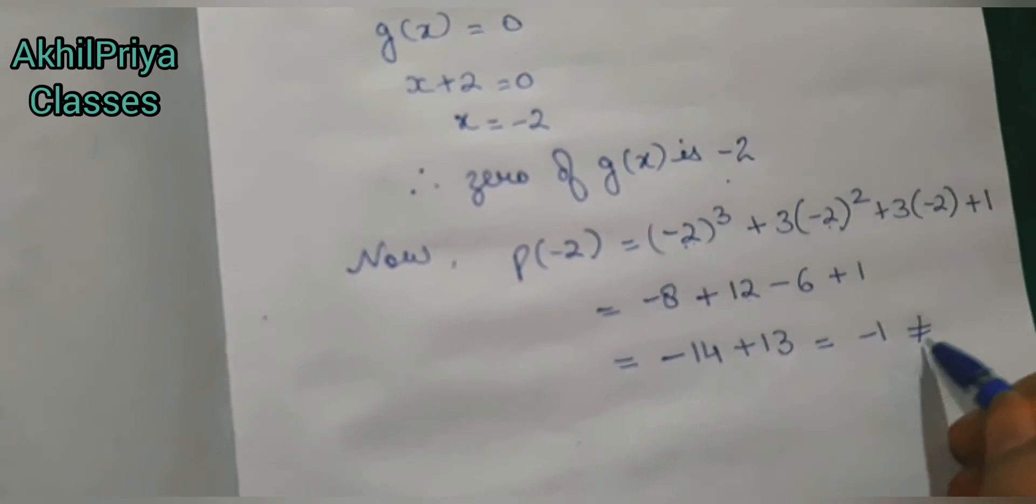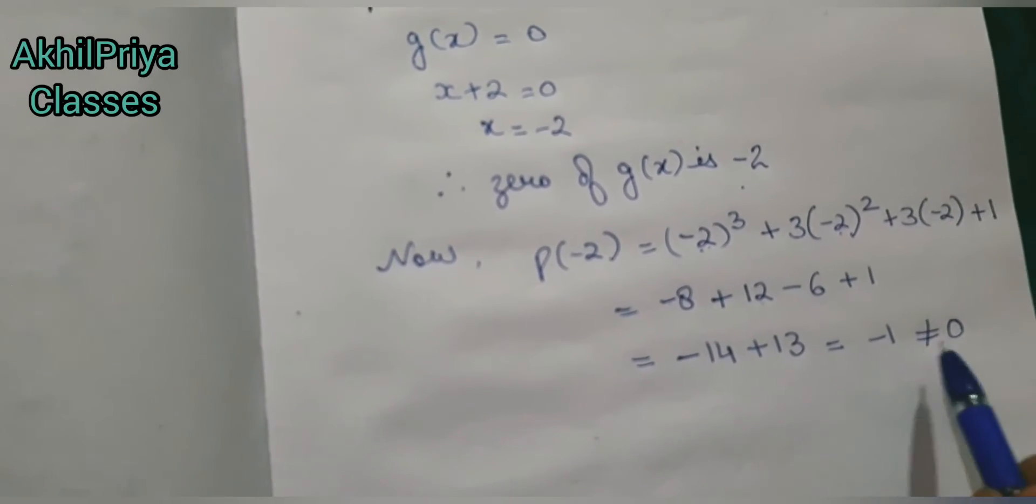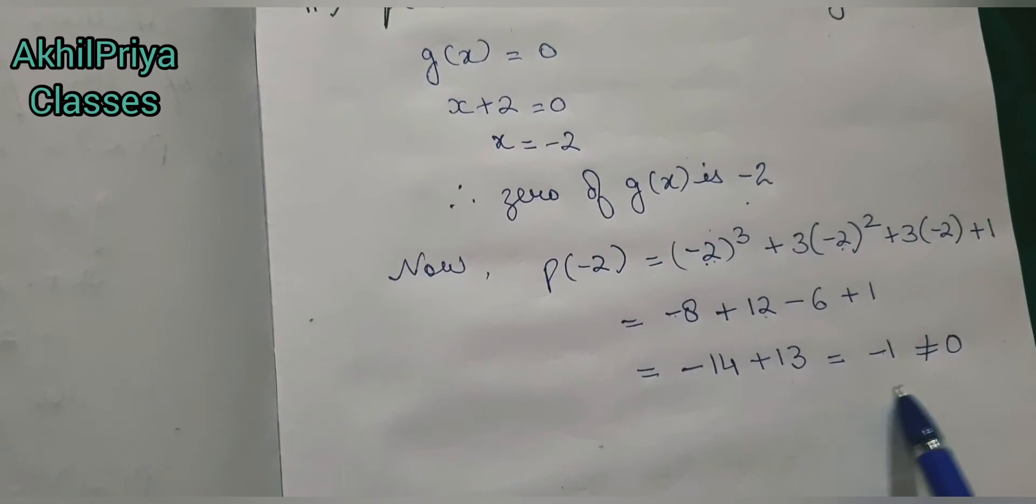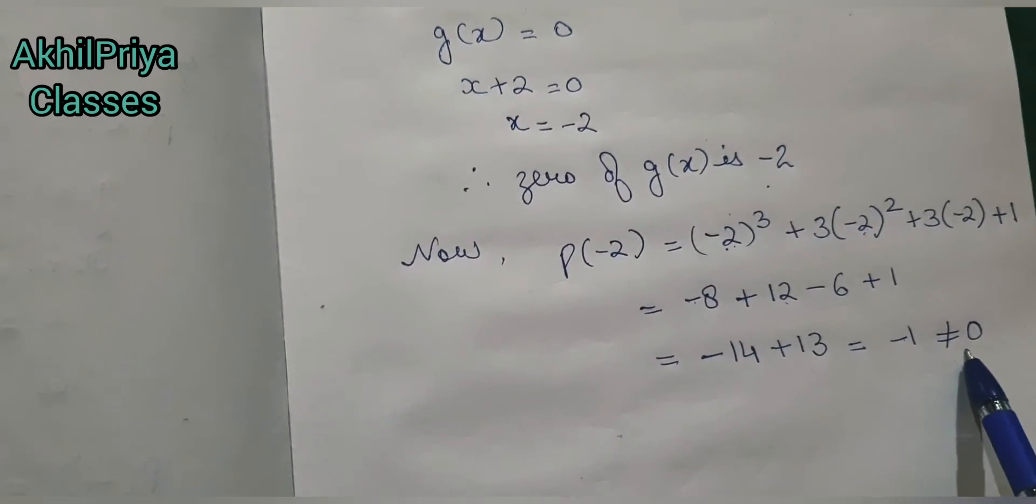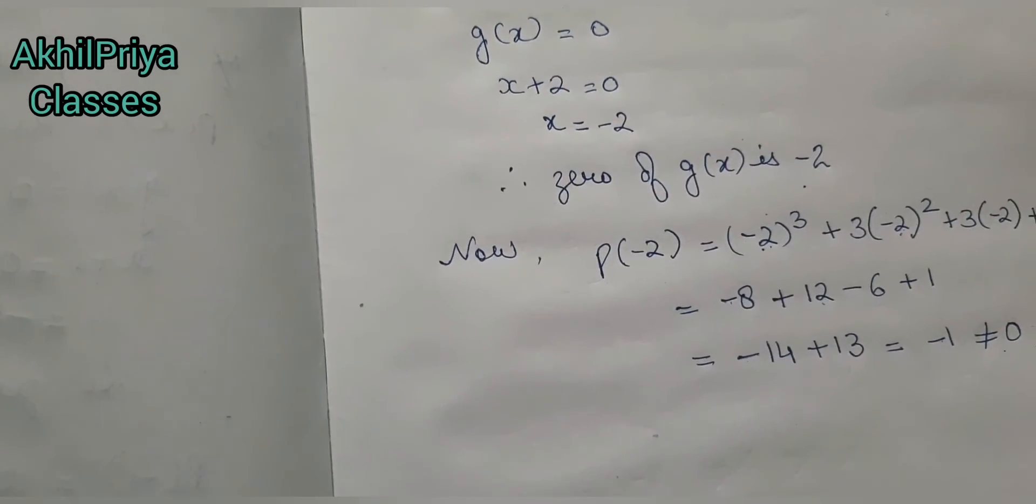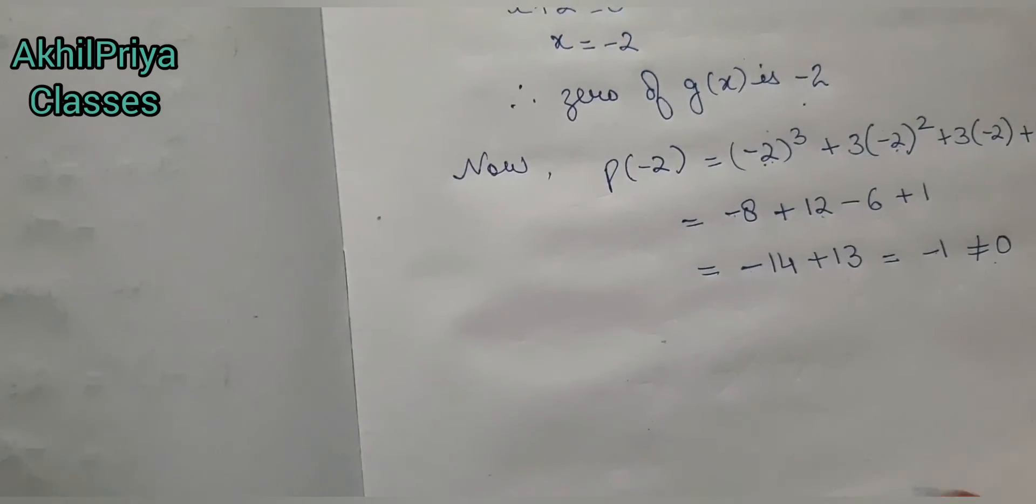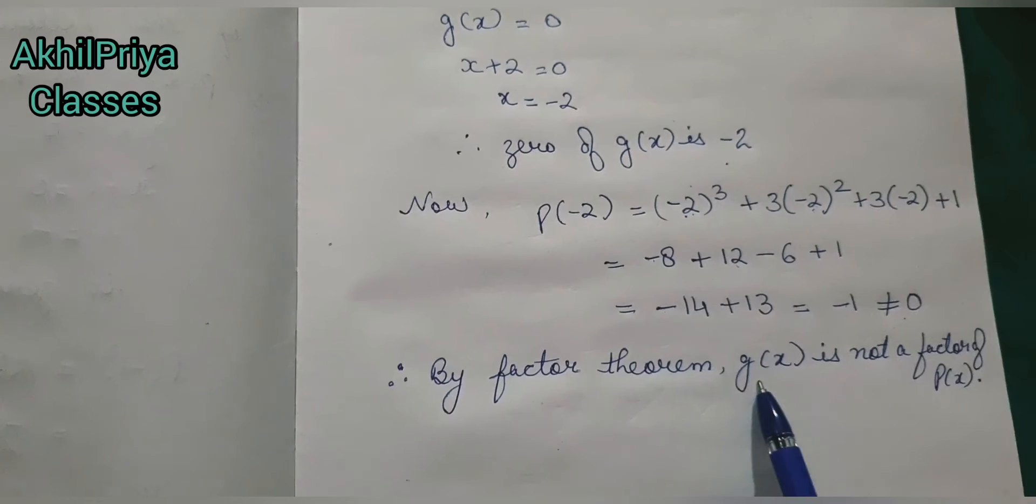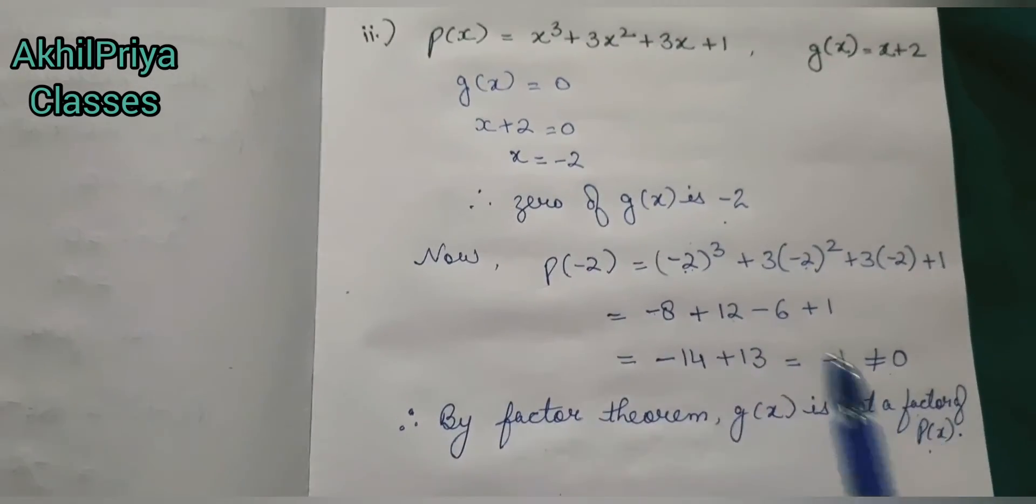Which is not equal to 0. Since the value of g(x) that we put as -2 simplified to not equal to 0, therefore by factor theorem g(x) is not a factor of p(x).